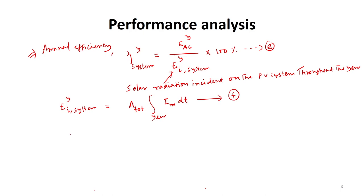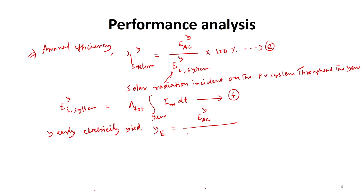The yearly electricity yield Y_E equals the yearly AC side energy divided by the total number of modules (number in series times number in parallel) multiplied by P_STC. This is expressed in watt-hour per kilowatt-peak on a yearly basis.